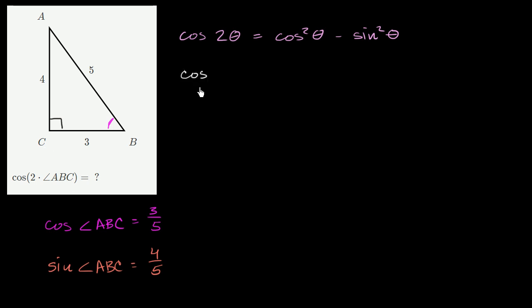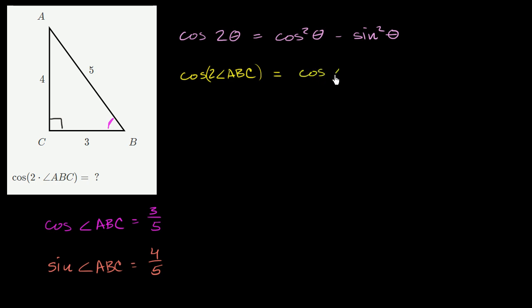Now we know that cosine of 2 times angle ABC is going to be equal to the cosine of angle ABC squared minus sine of angle ABC squared. And we know what these things are.